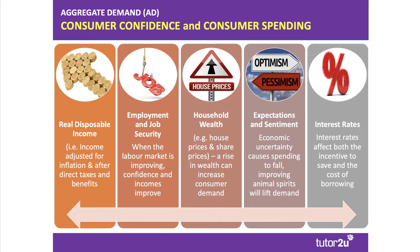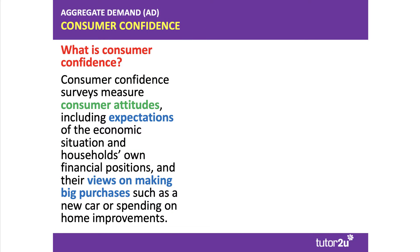The fourth factor is consumer confidence — expectations and sentiment. Consumer confidence brings all of these factors together. The level of economic uncertainty at a macro level can influence our spending today. When uncertainty is rising, people tend to spend a little less and save more. When animal spirits are improving — the Keynesian concept of animal spirits — people tend to spend more, and that lifts aggregate demand.